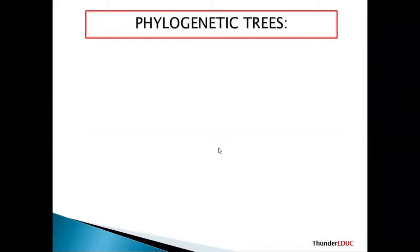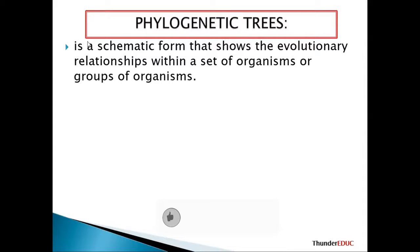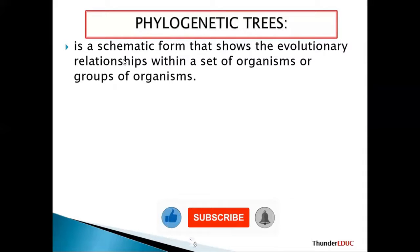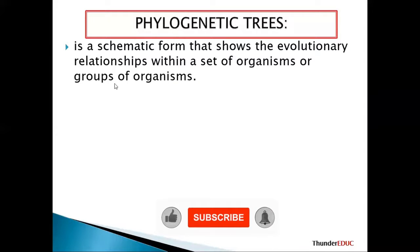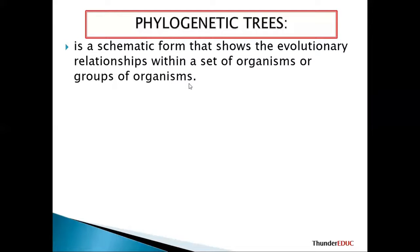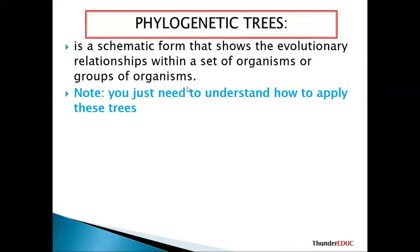A phylogenetic tree is a schematic form that shows the evolutionary relationships within a set of organisms or groups of organisms. It shows where organisms originally came from up to where they are now.